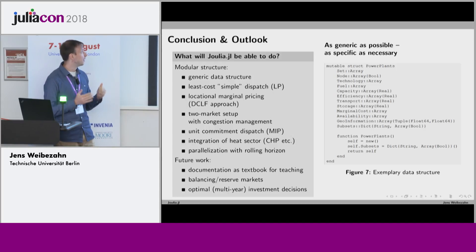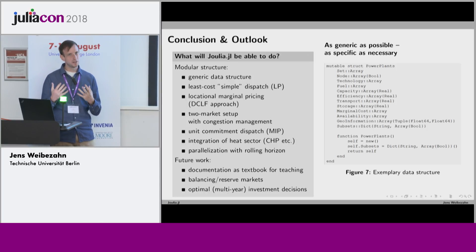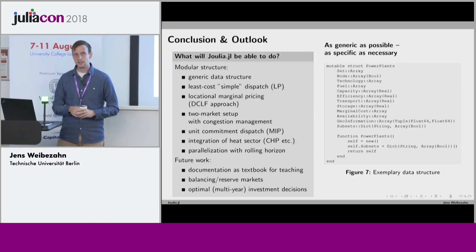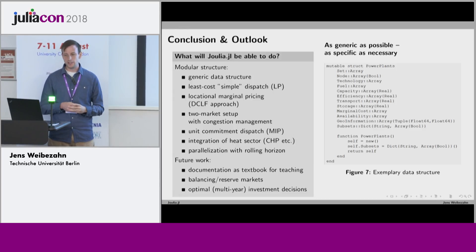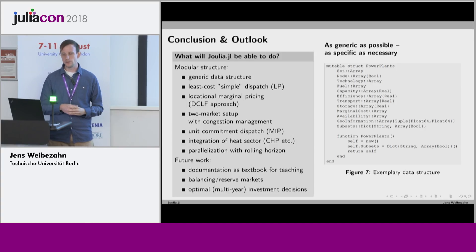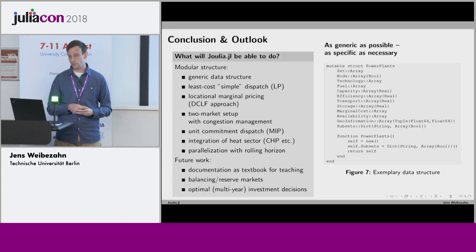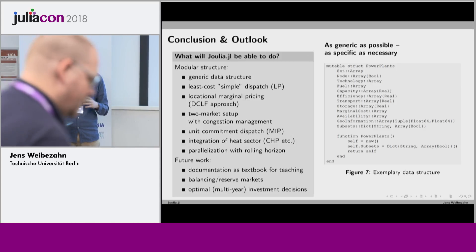As a short conclusion and outlook: what will Julia.jl actually be able to do? There will be a generic data structure so it will be clear how your data needs to be prepared for the package. It will do least-cost simple dispatch as an LP, allocation of marginal pricing using the DC load flow approach, a two-zone market setup with congestion management, and a unit commitment — the mixed integer formulation with ramping constraints, minimum on and off time, and so on for conventional power plants.